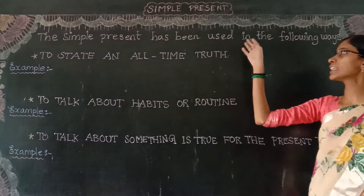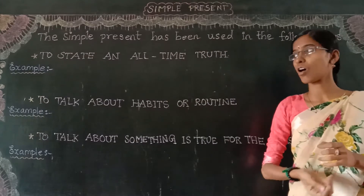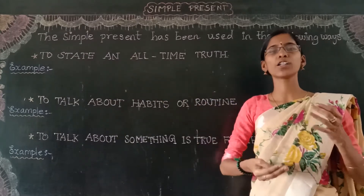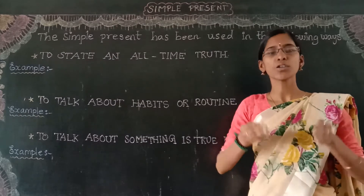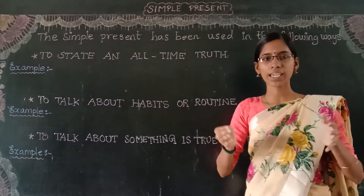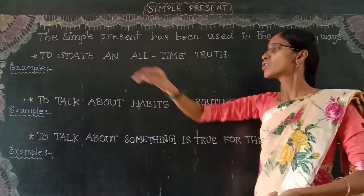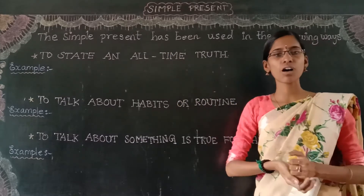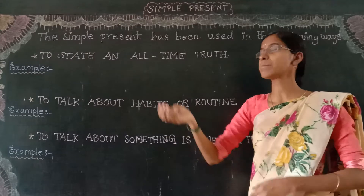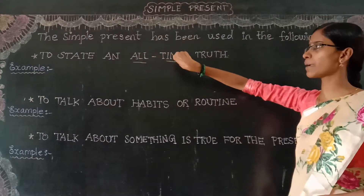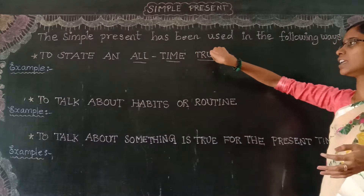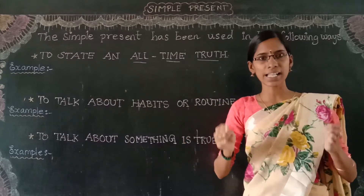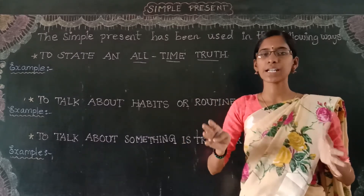The simple present tense is used in the following ways. Coming to the first rule: to state an all-time truth. Here we are talking about all-time truth, otherwise known as universal truth. While you are talking about a universal truth, then for that particular sentence, you have to use only the simple present form.